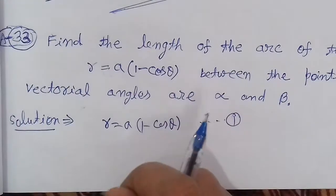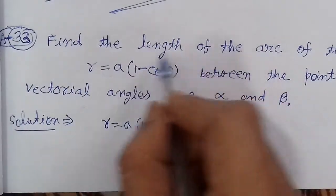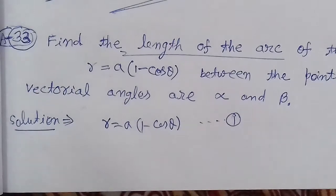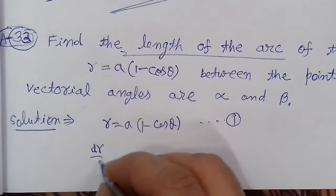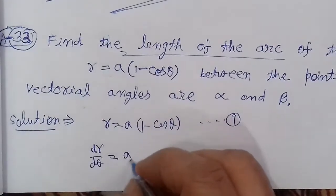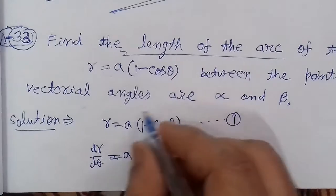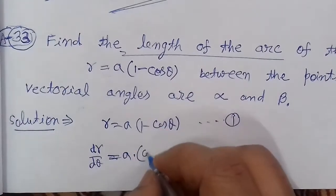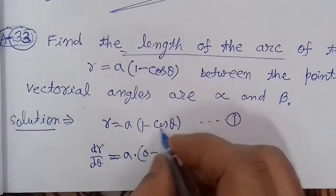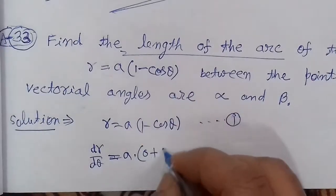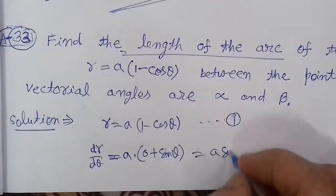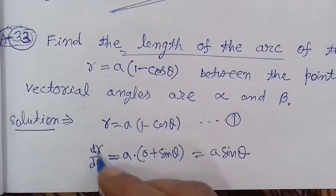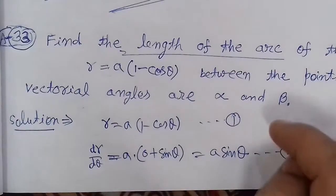We need the length of arc, so we need its derivative. When we apply the formula, we need to differentiate r with respect to θ. Since a is constant, take it out. The differentiation of 1 is zero, and the differentiation of cos θ is minus sin θ, so this becomes plus. Minus minus gives us a sin θ. So dr/dθ = a sin θ from equation number 1.